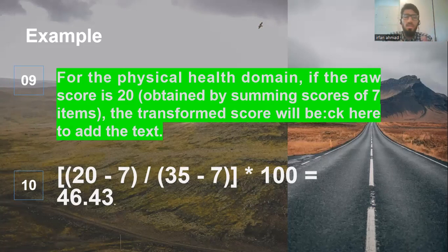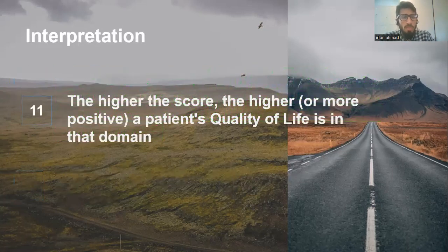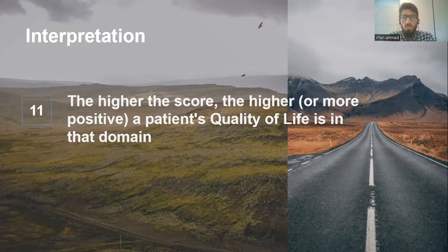So you will again do the same formula for the psychological domain, for the social domain, and for environmental domain. And you get the range of 100 for each domains. So now how to interpret it? So the higher the score, the higher or more positive the patient quality of life is in that domain. So you actually categorize each domain, then find the raw score, then convert it into out of 100 scores. So the out of 100 score you interpret, the higher the score, the higher is the quality of life in that domain.